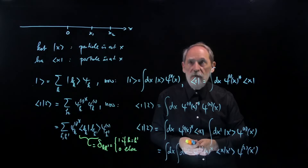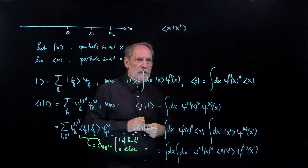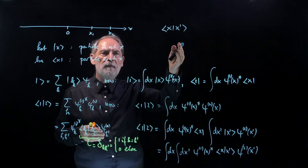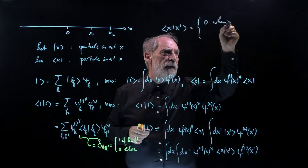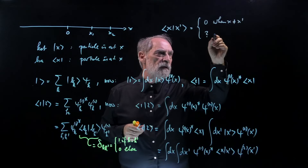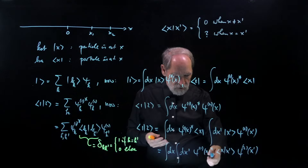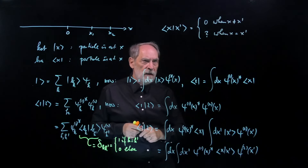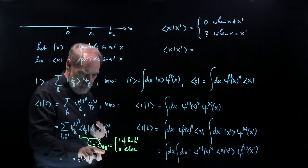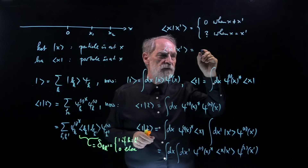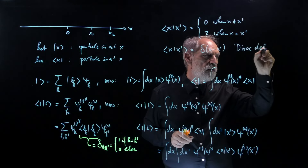So what do we write for this bracket ⟨x|x'⟩? First, if the particle is at x, then it is not at x', if the two are different — so we need to get zero when x is not equal to x'. And we need something that turns the double integral into the single integral. The answer is the analog of the discrete Kronecker delta symbol, for which we write δ(x − x'). This is called the Dirac delta function.